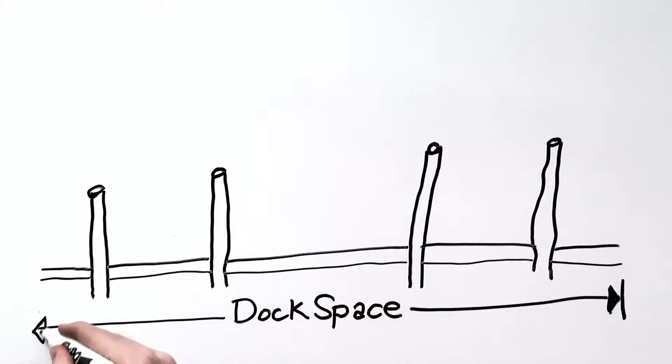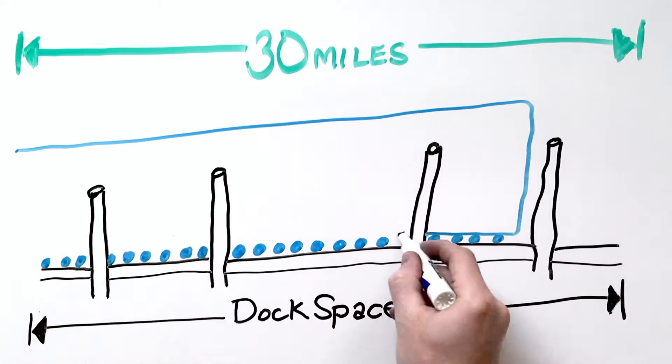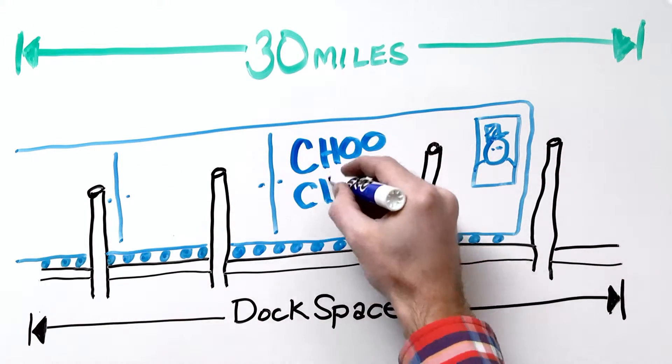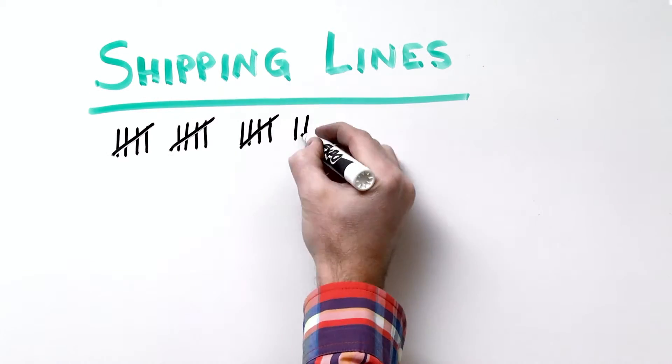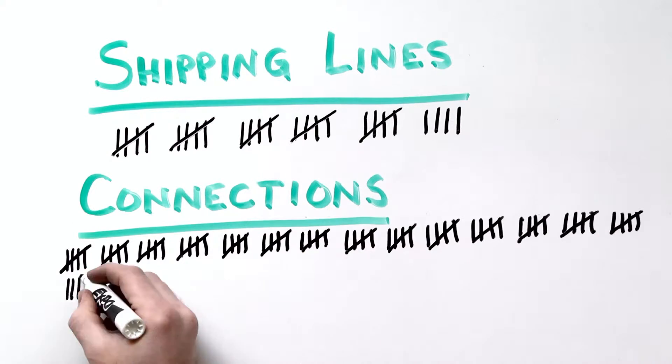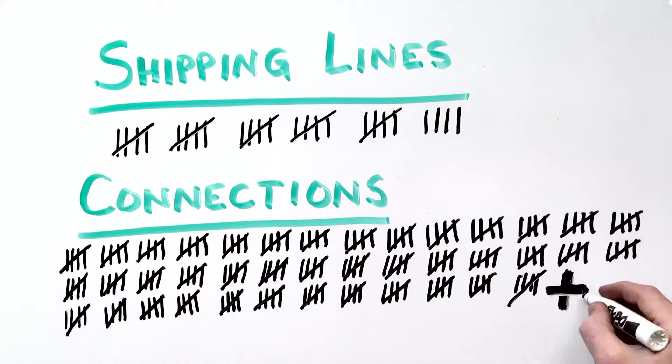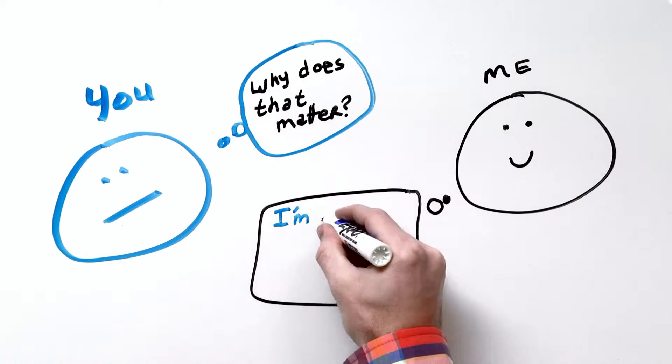That rail and the port help to support nearly 30 international shipping lines, making connections to more than 200 countries. So why does that matter? Well, I'm so glad you asked.